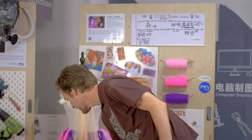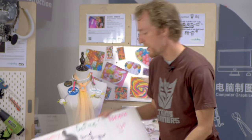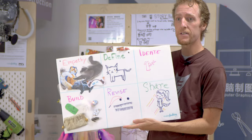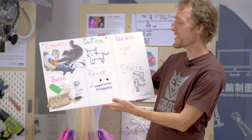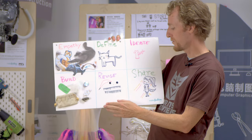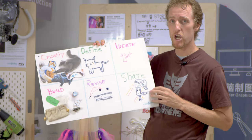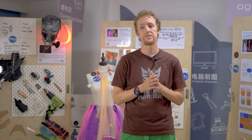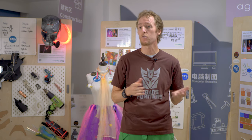Our six steps are empathy, define, ideate, build, revise, and share. I base them off of Stanford D.School's design thinking steps, but we have a sixth one — sharing.